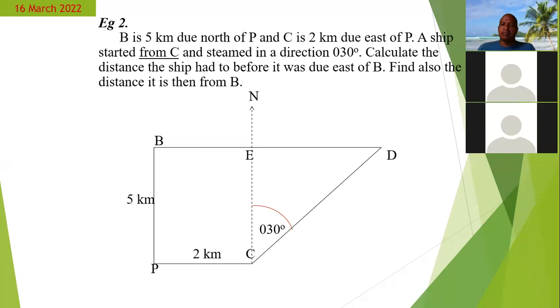Student: From there, sir, I am thinking that we would need to find ED first. Teacher: They want to calculate CD first. That's the distance the ship had to go before it was due east of B. So it started at C and ends up at D. You had already mentioned, Miss Wickham, that from C to E, this vertical dotted line is five kilometers.